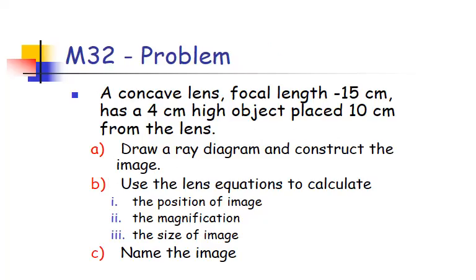Let's go ahead and try concave. Concave is like this, and the focus is negative 15, and it's 10 centimeters from it. Go ahead and give this one a try — pause the clip and draw, calculate, and name. When you're ready to check, you can hit play to continue.